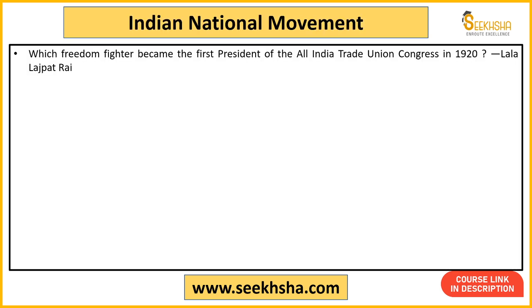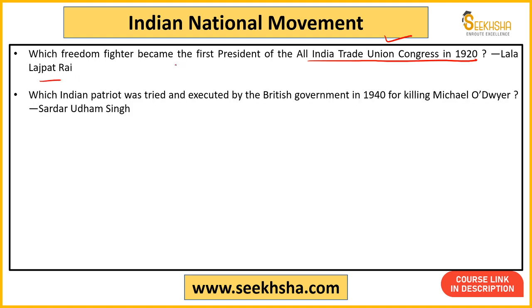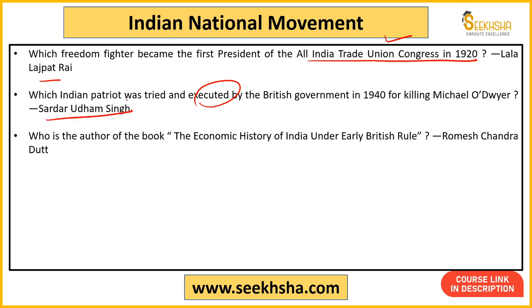Now moving to some important points of the Indian National Movement. The freedom fighter who became the first president of the All India Trade Union Congress was Lala Lajpat Rai — important from both industrial relations and history perspectives. The Indian patriot executed by the British government in 1940 for killing Michael O'Dwyer was Sardar Udham Singh, who had gone to London and shot him.